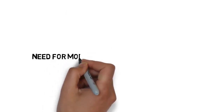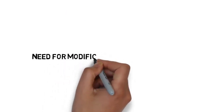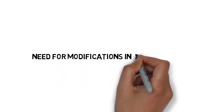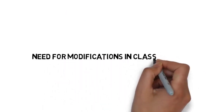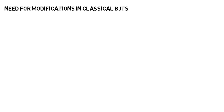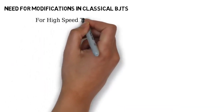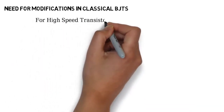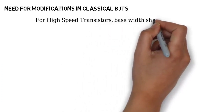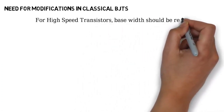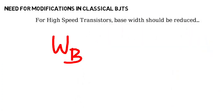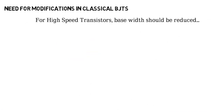Now we can discuss about the need for modification in classical bipolar junction transistors. For high-speed transistors, the width of base, normally represented as W suffix B, should be reduced. But when you reduce the base width, a couple of things will happen.